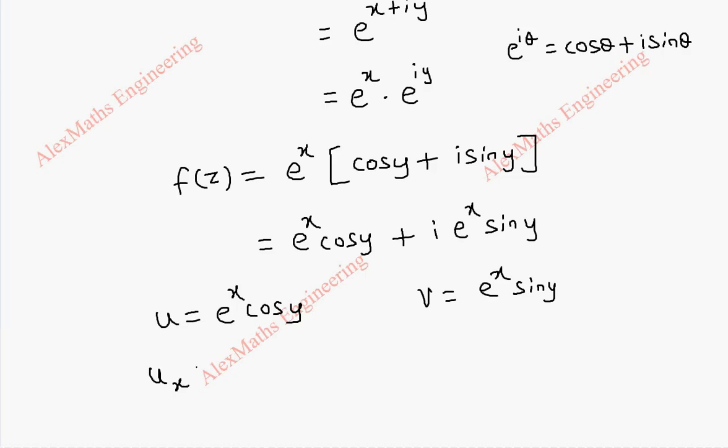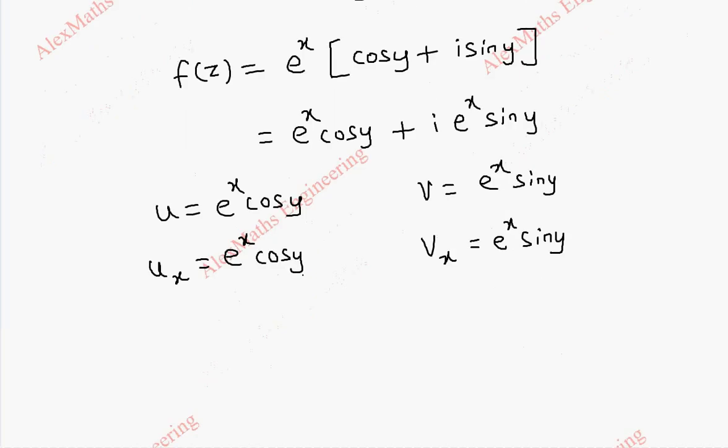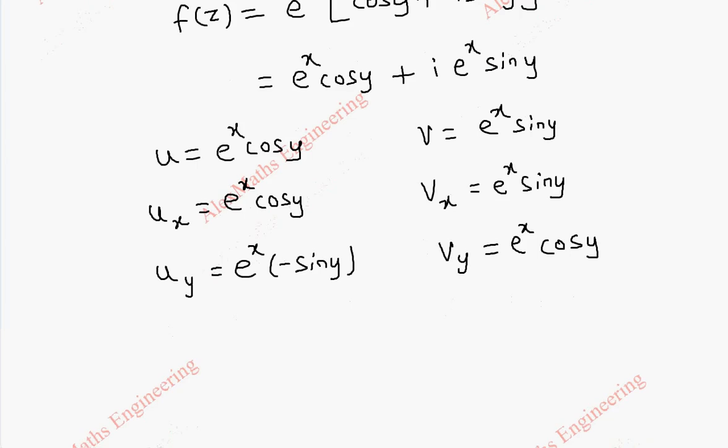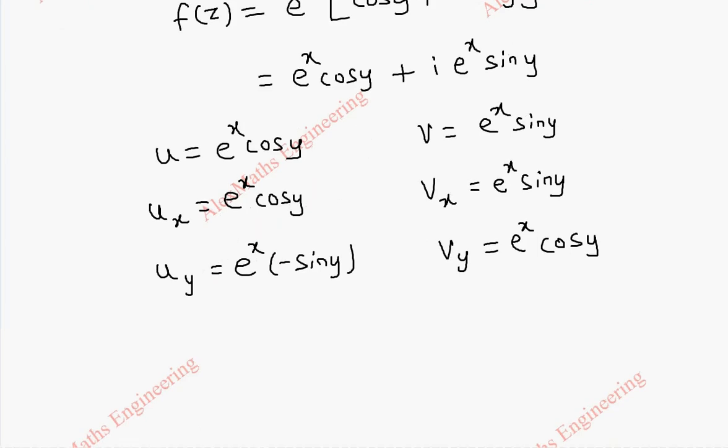From this we can get ux, that is y is a constant, e^x is e^x and constant cos y is kept as it is. And vx will be derivative of e^x is e^x and sin y is a constant which is kept as it is. Then uy is e^x is a constant and this is minus sin y, and vy is e^x is constant and derivative of sin y is cos y.